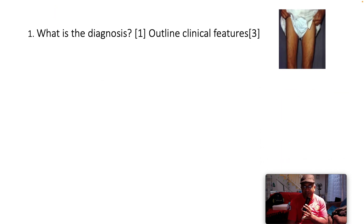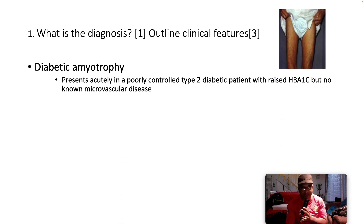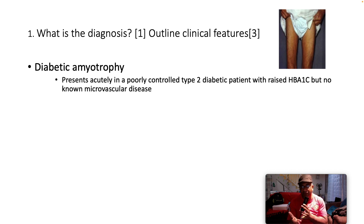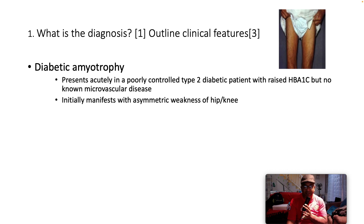What's the diagnosis? This is diabetic amyotrophy, especially involving the right thigh. We can see that there's wasting on the right compared to the left. Both are actually wasted, but the right more so than the left. What are the features of diabetic amyotrophy? It usually presents acutely in a patient who has type two diabetes, who is poorly controlled with raised glycated hemoglobin, but not known with any microvascular disease.